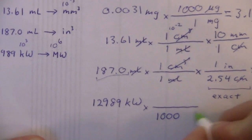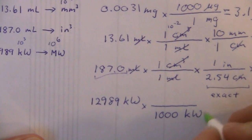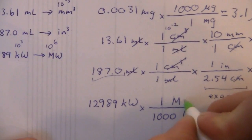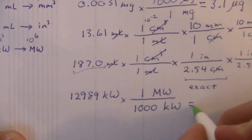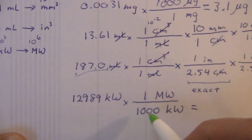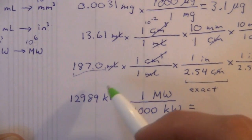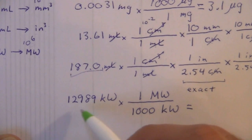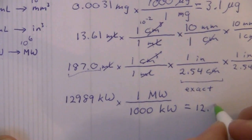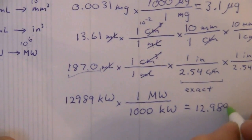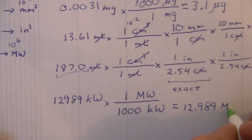When we put that here, we're going to put that on the bottom: one thousand kilowatts in one megawatt. So what we get from this—we're dividing by a thousand, so we're going to move the decimal place to the left three places. We'll have 12.989 megawatts.